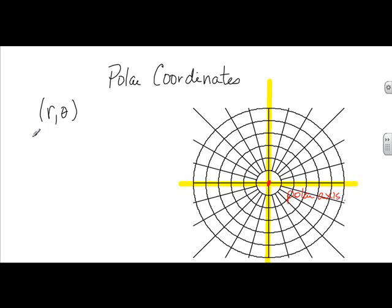So r is the directed distance from the pole, so the directed distance from the origin. And then θ is an angle in standard position.